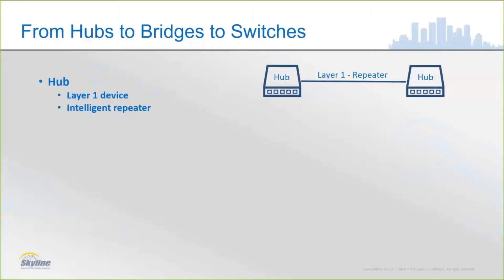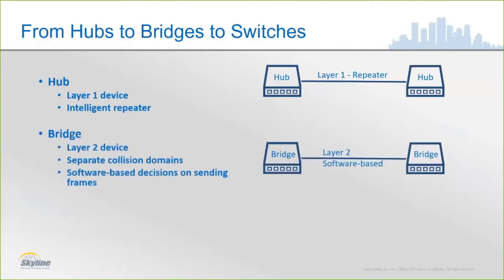In the beginning of twisted pair copper connecting computers, we had hubs. A hub is basically a layer one device — it effectively repeats anything that it receives. It also causes endpoints to have carrier sense multiple access with collision detection (CSMA/CD) enabled. We evolved from there into what was called bridging, which is where a lot of the terminology for Spanning Tree Protocol — the protocol we're going to discuss today — came into play.